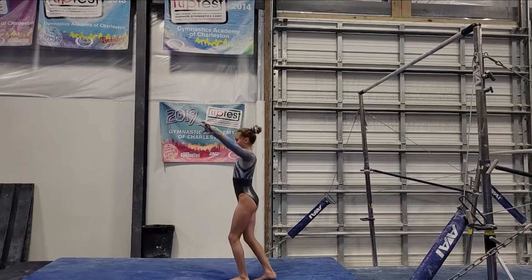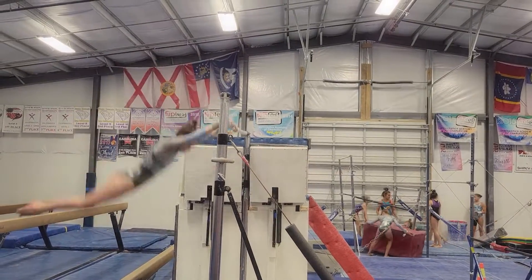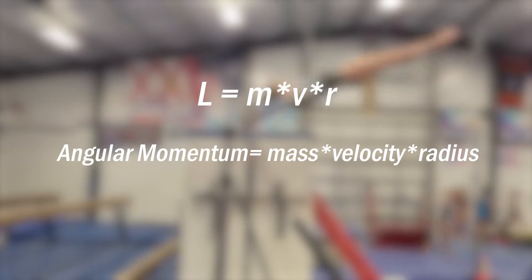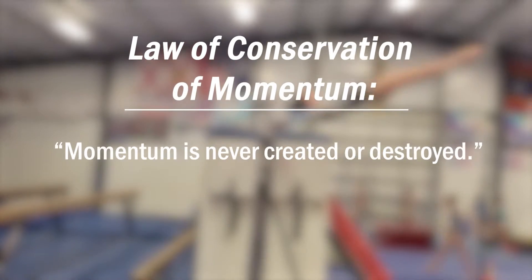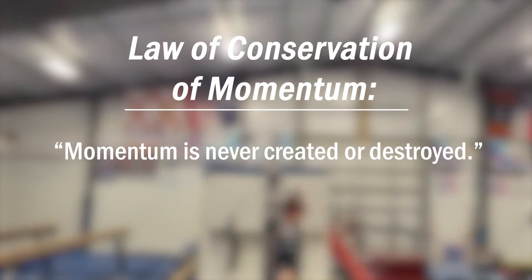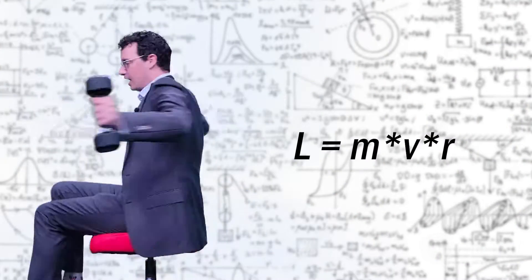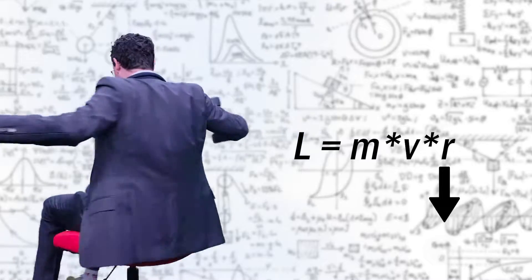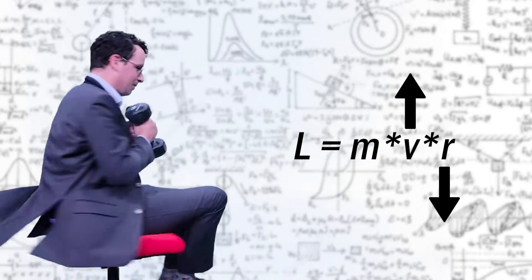Physics explains why this is the case through a concept called angular, or rotational, momentum, which is simply the product of mass, velocity, and the distance from the center of rotation. The important thing about it is that it's conserved — neither created nor destroyed, but it can be manipulated. Spinning in this chair, I have a set amount of angular momentum which doesn't change. So if I decrease one variable — say the distance from the center of rotation — the other, velocity, must increase.